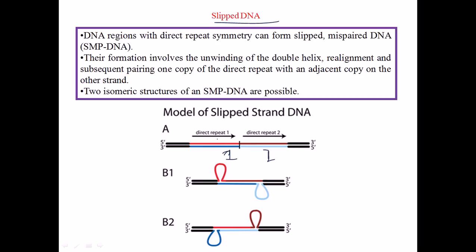Since we have only direct repeats, for example if we have stretches of adenine on one strand, the opposite side will have stretches of thymine. If some part of the adenine strand bulges out and is cut off, the opposite strand is still able to make bonds with the rest of the chain because many of the same nucleotide bases are present. There is no trouble forming hydrogen bonds due to the complementary nature and the poly-nucleotide sequences.